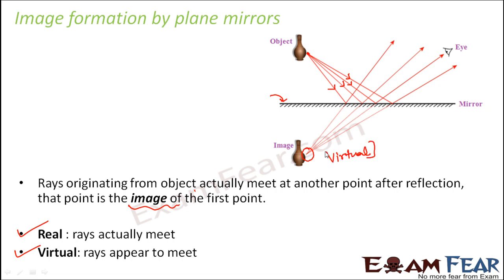So if you try to extrapolate them using dotted lines, it feels as if they will meet at this point. So this type of image is called virtual. This is the basic concept behind image formation by a plane mirror.